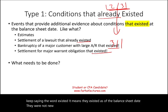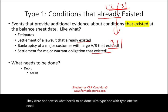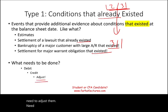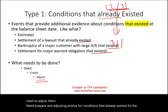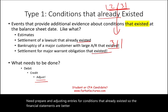So what needs to be done with Type 1? With Type 1, we need to debit something and credit something else — it means we need to adjust them. We need to prepare adjusting journal entries for conditions that already existed so that the financial statements are more fairly presented and give a better picture.